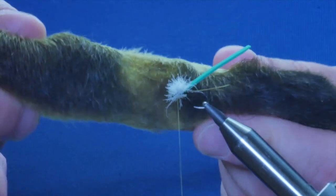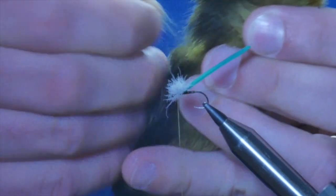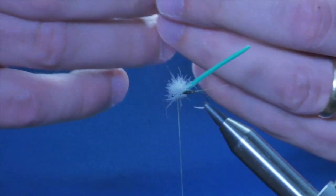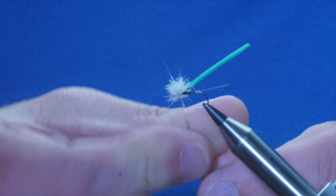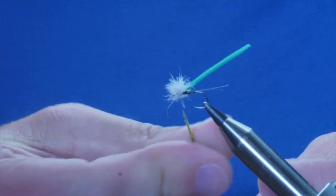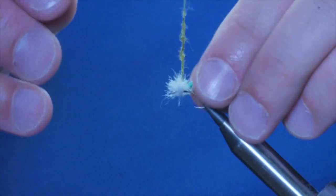Next, I'm going to add a little bit of snowshoe in the thorax here. So, I'm just going to take a little tiny, tiny pinch from the inside of the snowshoe. Makes lovely dubbing this. And I'm going to attach that in like so.